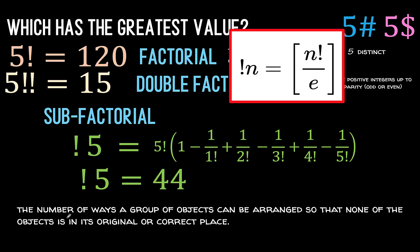So there are 44 derangements of 5 objects. Derangement is the number of ways that a group of objects can be arranged so that none of the objects is in its original or correct place when you start. We'll have more videos about derangement and sub-factorial later on.